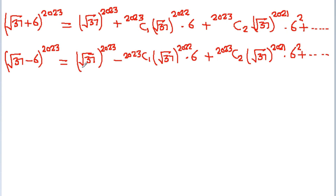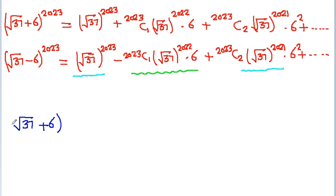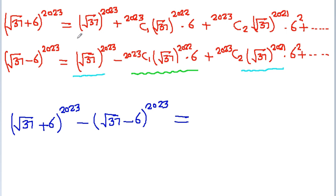Here we have odd powers of √37, so those terms are irrational. But even powers of √37 give rational numbers. So if we subtract these two expansions, the terms at odd places cancel and the terms at even places become 2 times.